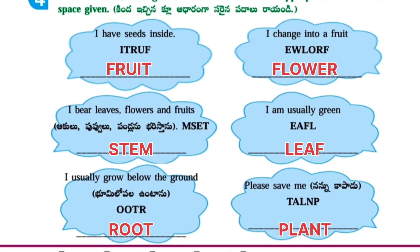Read the clue, arrange the letters, and write the appropriate word in the space given. I have seeds inside — F, R, U, I, T — fruit. Next one: I change into a fruit — flower. I bear leaves, flowers, and fruits — stem. I am usually green — leaf. I usually grow below the ground — root.